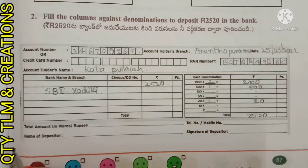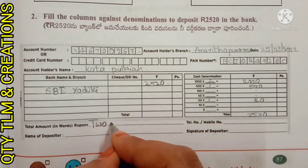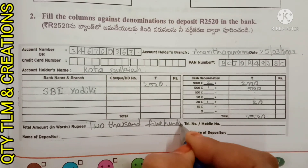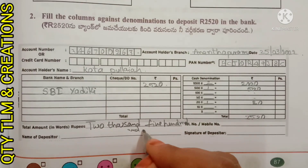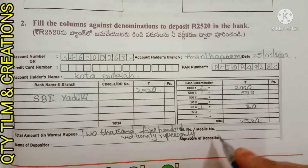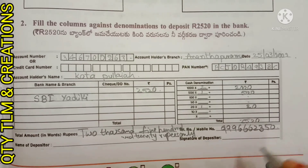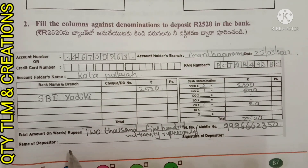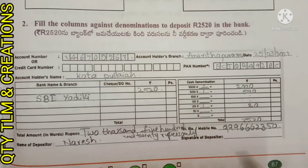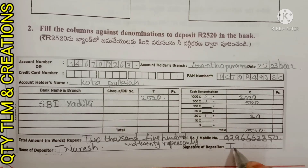Total amount: 2520 rupees. Amount in words: two thousand five hundred and twenty rupees only. Mobile number, for example 9996662350. Name of depositor: for example Nourish. Signature of depositor: depositor should sign here, for example T. Nourish.